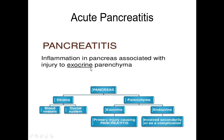Pancreatitis means inflammation in the pancreas associated with injury to the parenchyma. In anatomy, the pancreas consists of stroma and parenchyma. Stroma consists of blood vessels and ductal system. Parenchyma consists of two parts: the exocrine part and the endocrine part. Primary injury causing pancreatitis occurs in the exocrine part.